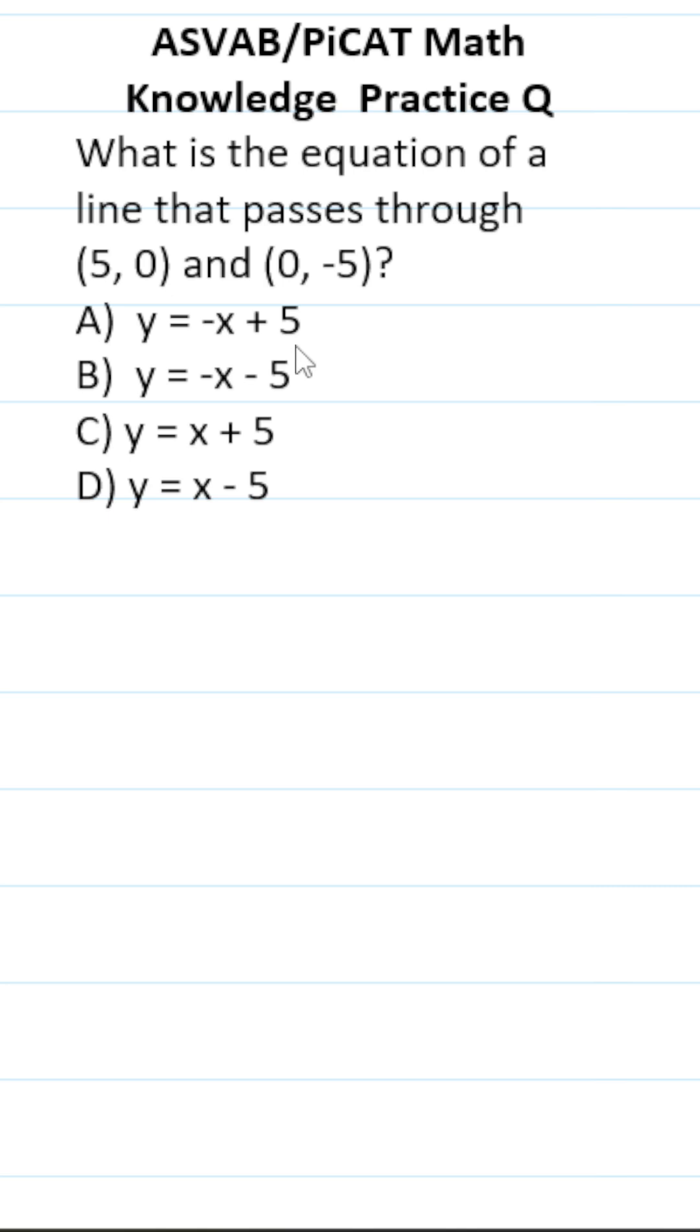So the first thing we have to calculate is slope, that is m, and we calculate that using this formula: y2 minus y1 all over x2 minus x1.